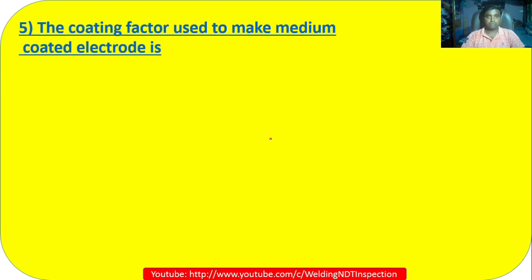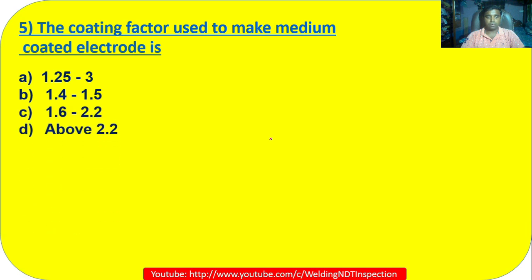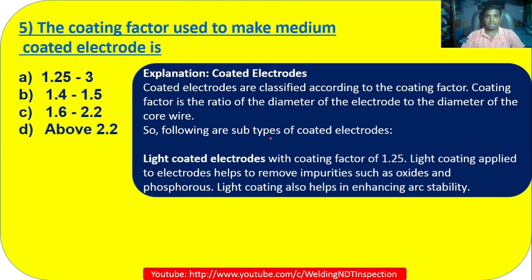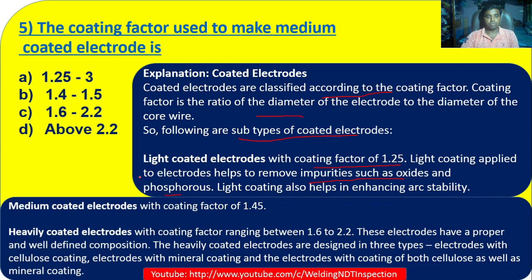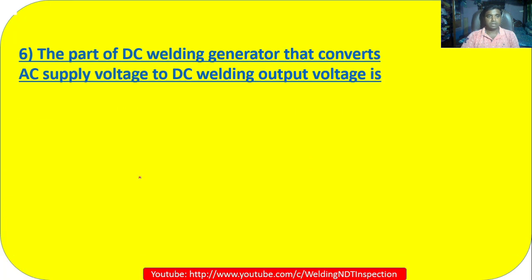Question 5: The coating factor used to make a medium coated electrode is: A) 1.25 to 3; B) 1.4 to 1.5; C) 1.6 to 2.2; D) above 2.2. Coated electrodes are classified by coating factor, which is the ratio of the diameter of the electrode to the diameter of the core wire. Light coated electrode has a coating factor of 1.25. For medium coated, the correct answer is 1.4 to 1.5 — Option B.